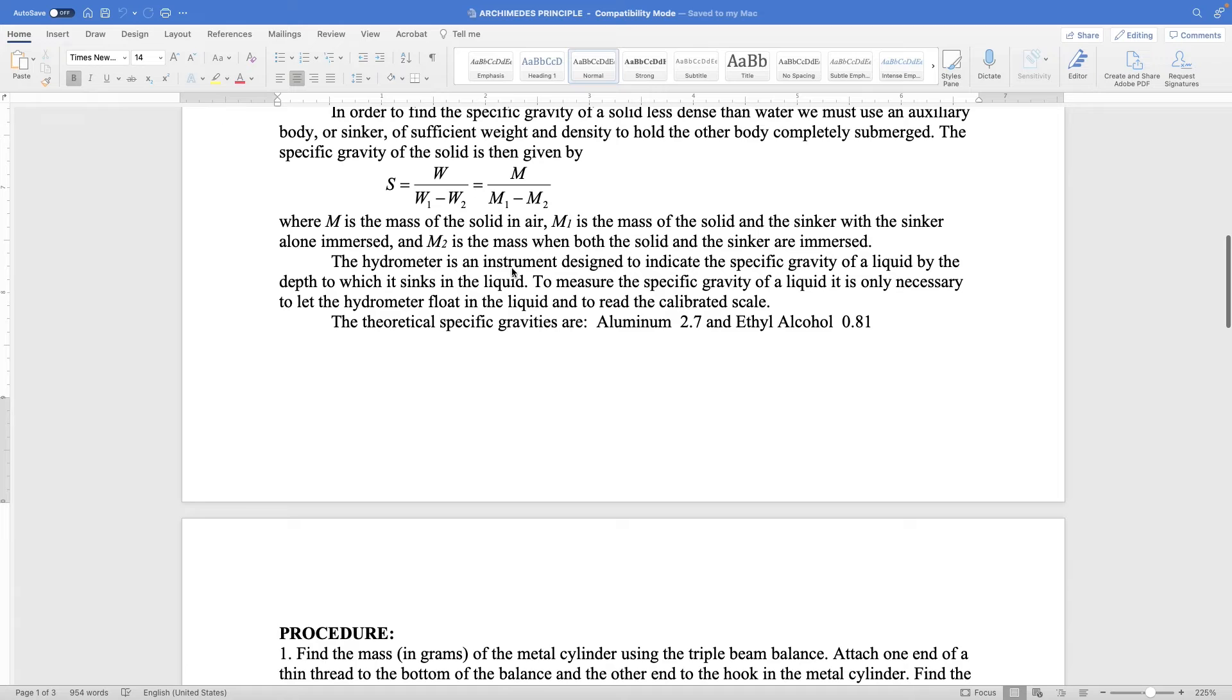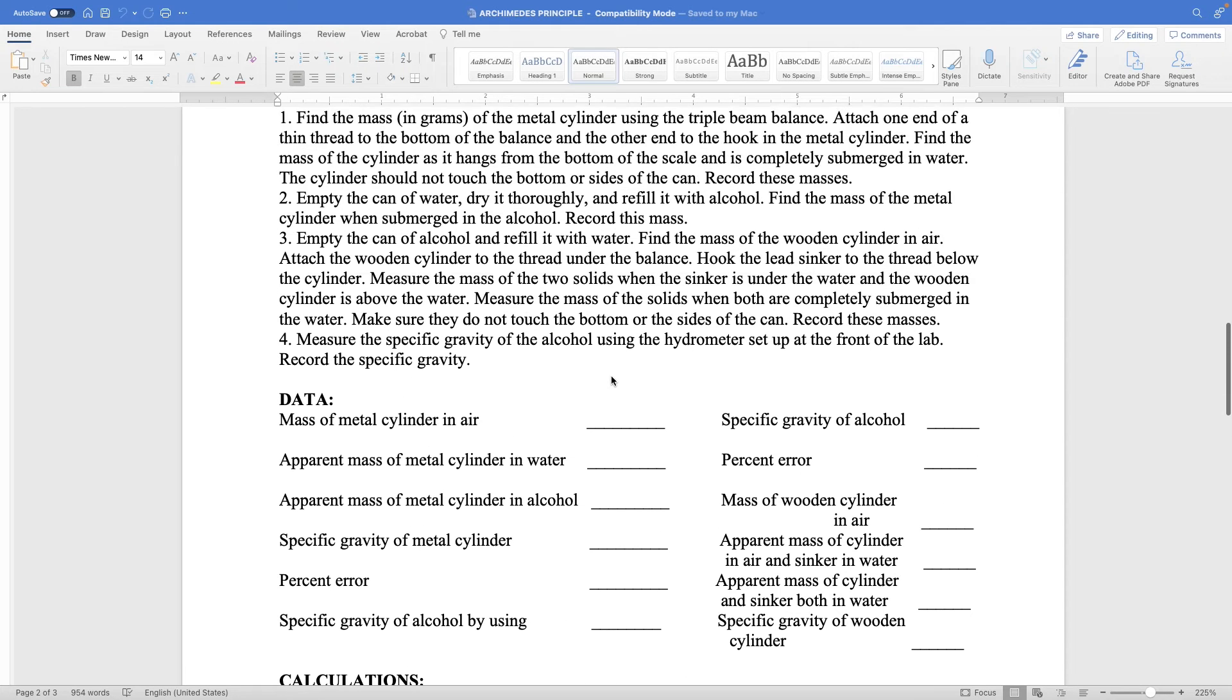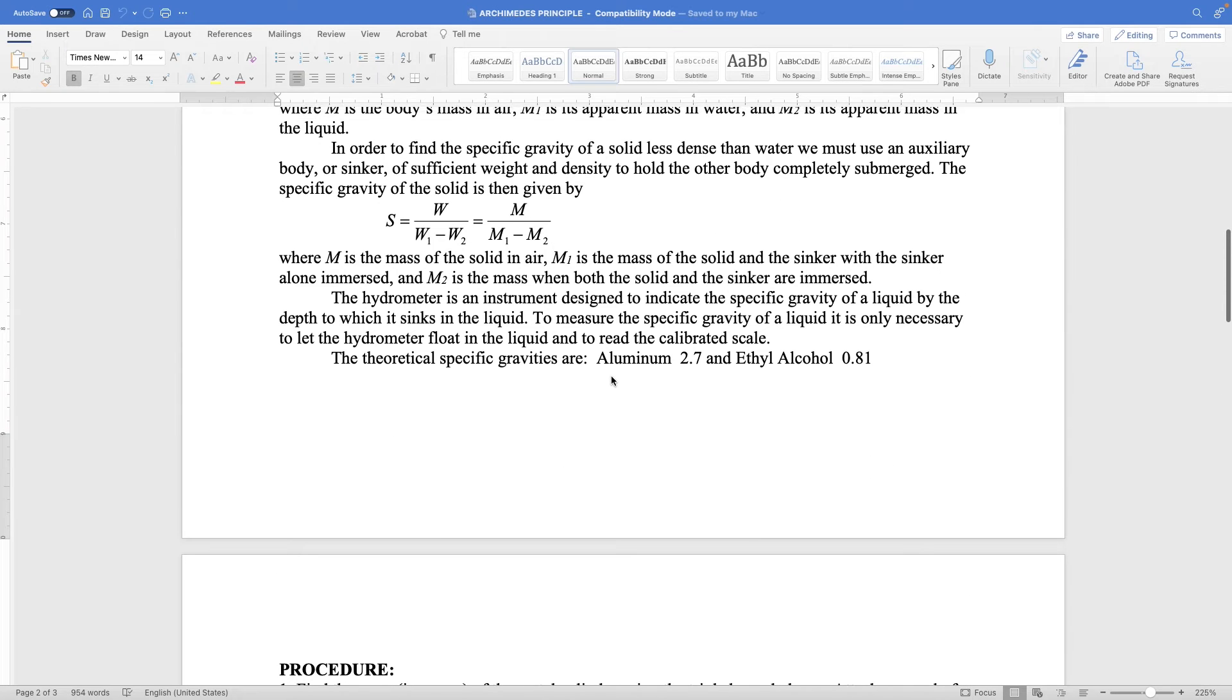Now the hydrometer is an instrument designed to indicate the specific gravity of a liquid by the depth to which it sinks in the liquid. I've not shown that. I'm going to show you that there is a part where you enter that specific gravity of alcohol by using—include the word hydrometer and put the value as 0.8, 0.8. Now the theoretical specific gravities of aluminum and ethyl alcohol, which is the one we used, is given here. That's for calculating the percentage error.